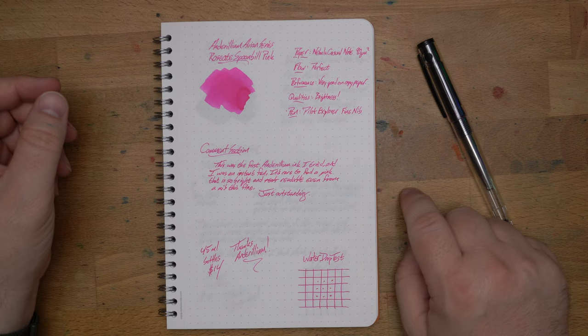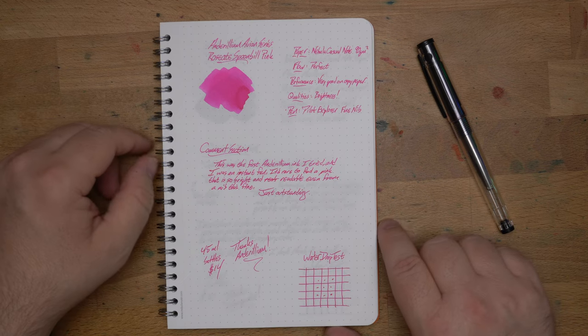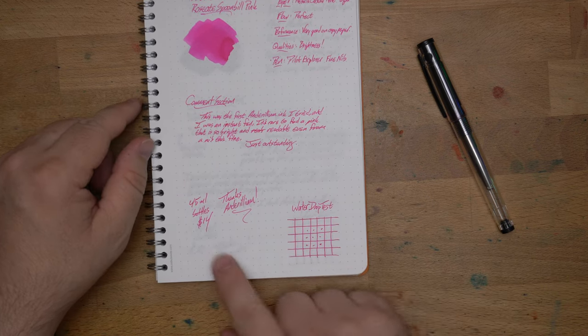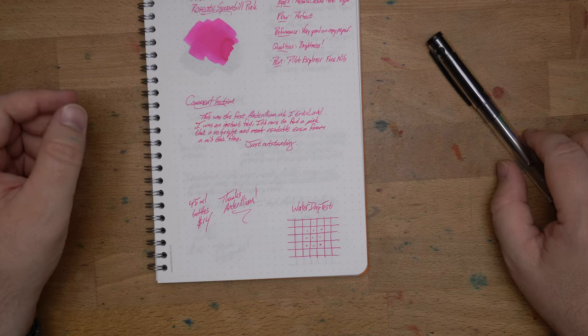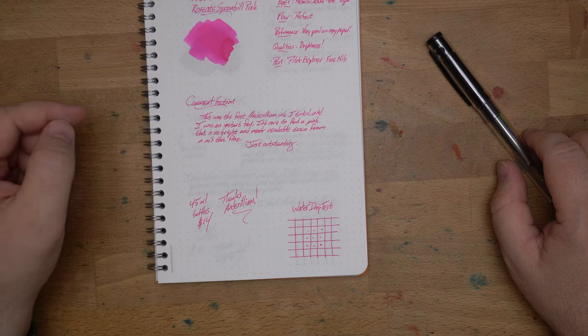But this, as the first Anderillium I tried, is just kind of a banger. It's very good. It also comes in these 45 milliliter bottles. I don't have any yet. I'll get some here soon, I'm sure. For $14, it's a very reasonable price for a little jam bottle like that.